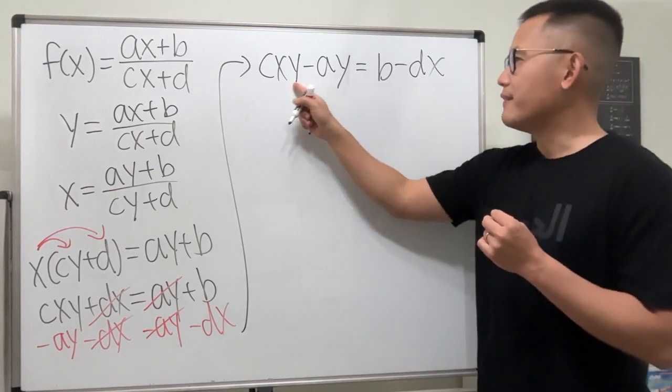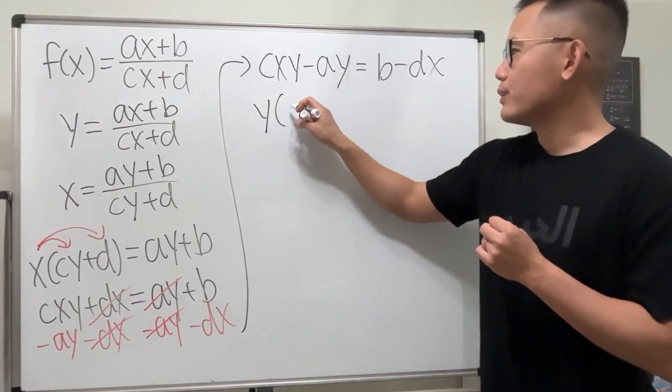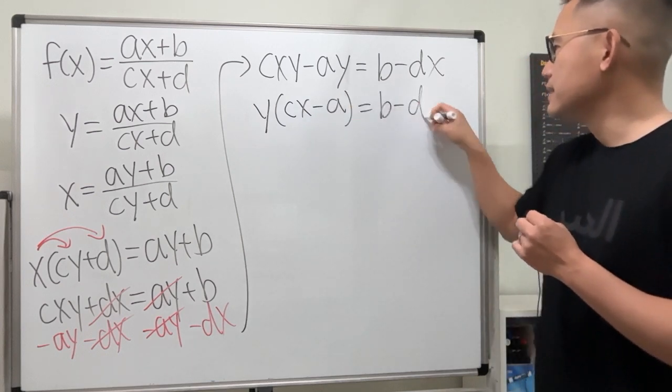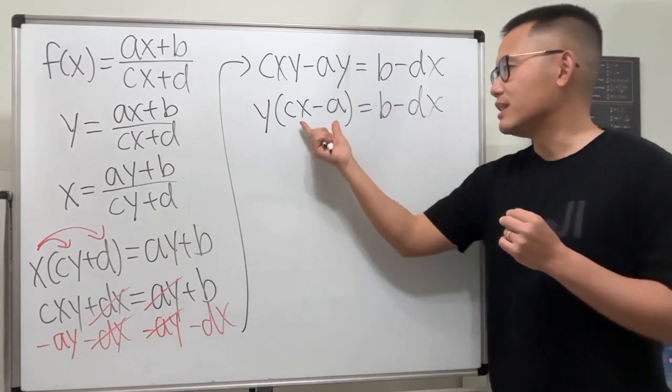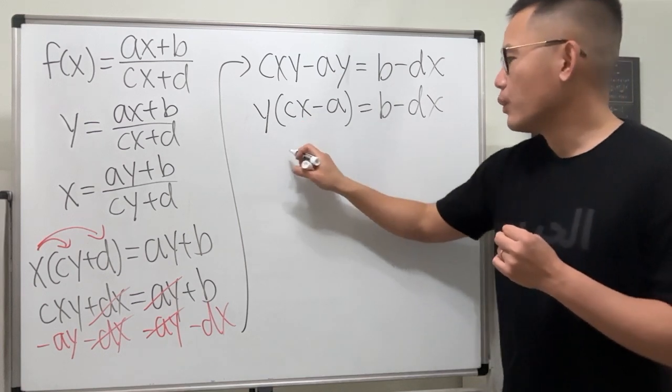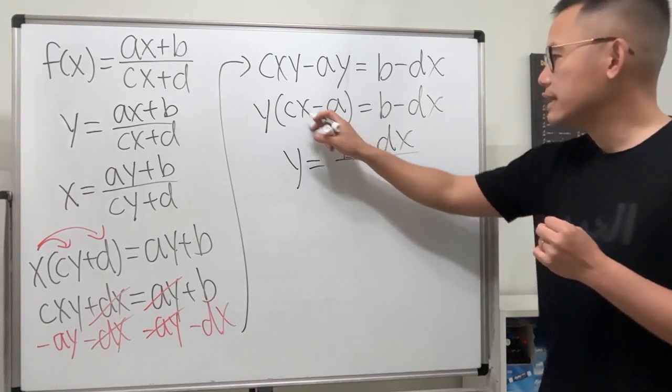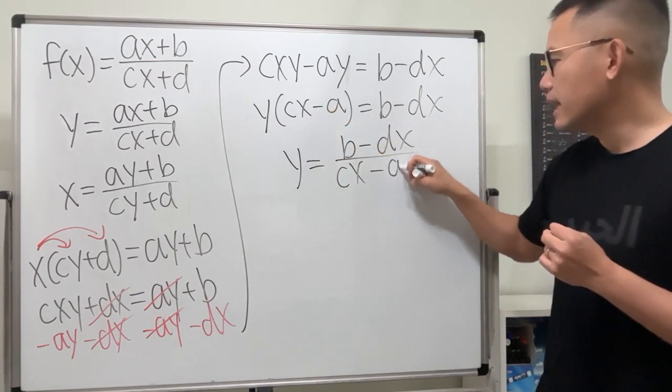Now, we can factor out the y. So y times cx minus a equals b minus dx. And then we can just divide this to both sides. So we get y is equal to b minus dx over cx minus a.